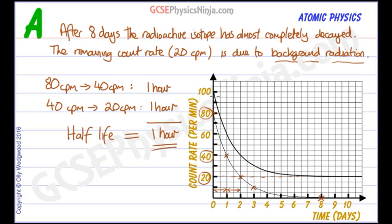Note that if you try and do this with the original data, it'll all go wrong and we won't get an hour for the half-life. So you must subtract the background radiation first, then plot on the graph. Or you might be asked to subtract the background radiation from data given in a table or in a graph. Hope that makes sense.